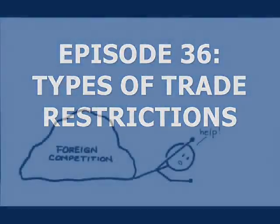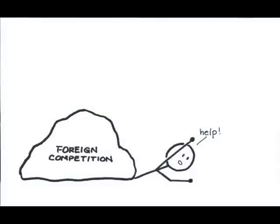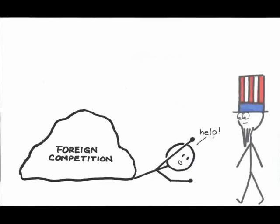Let's say that you are a domestic producer who is losing out to foreign competitors because you have the comparative disadvantage in production relative to that foreign producer. You've gone to the government to ask for help in the form of trade restrictions, but what type of restriction will be put into place? Let me walk you through the various tools that could be used, and how each would affect not only the market, but the players in that market.